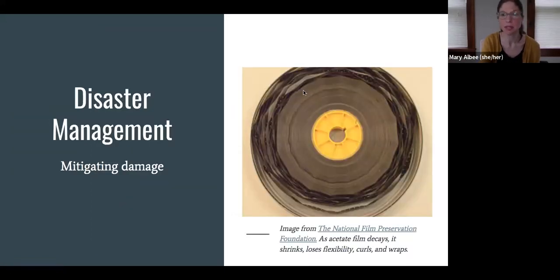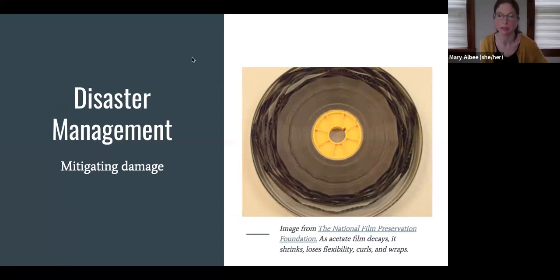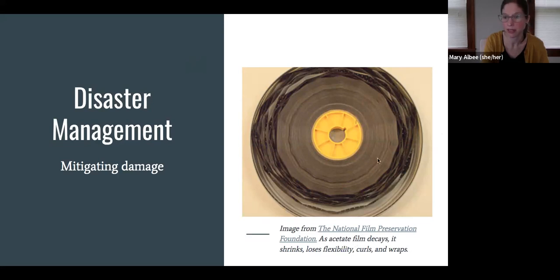Disaster management: what happens when we encounter a film that maybe hasn't been stored in the optimal conditions? What can we do to prevent that, and if we encounter a film that has already suffered some damage, what steps can we take to hopefully remediate it? The image here is of acetate film decay, also called vinegar syndrome. You can see how the film starts to look in advanced vinegar syndrome — it begins to shrink and get curly and wavy, and it loses its flexibility.